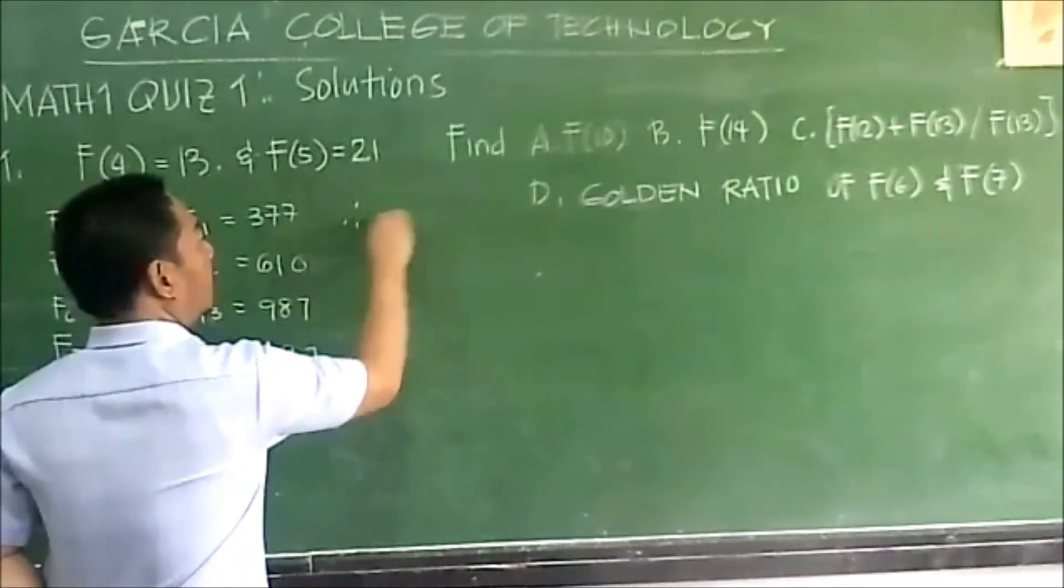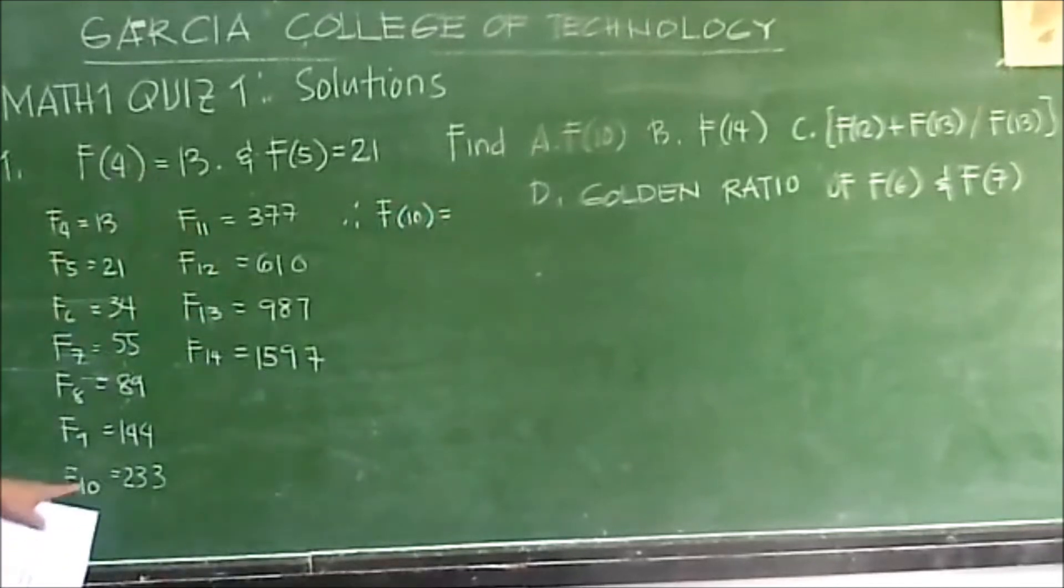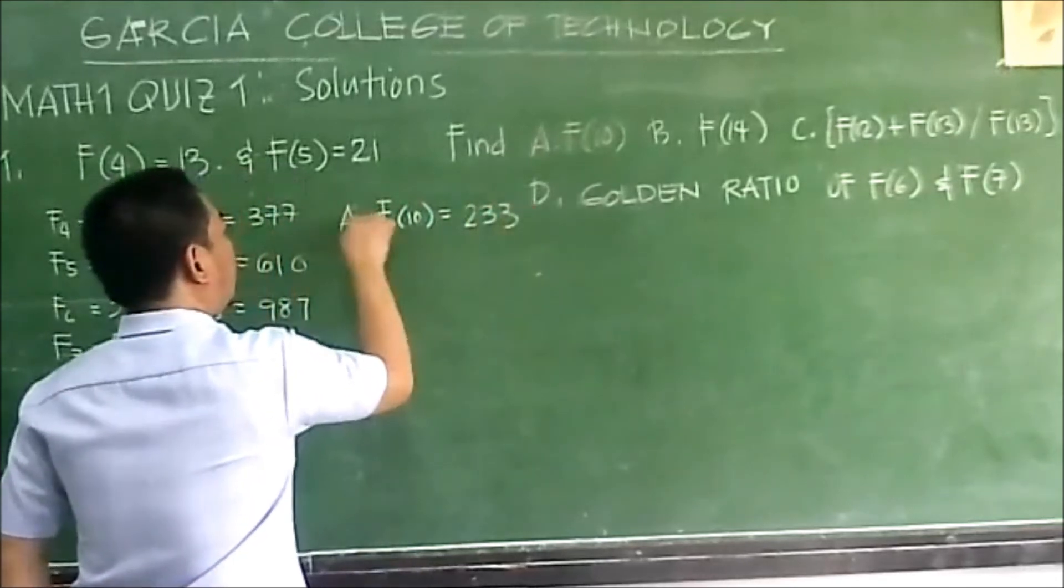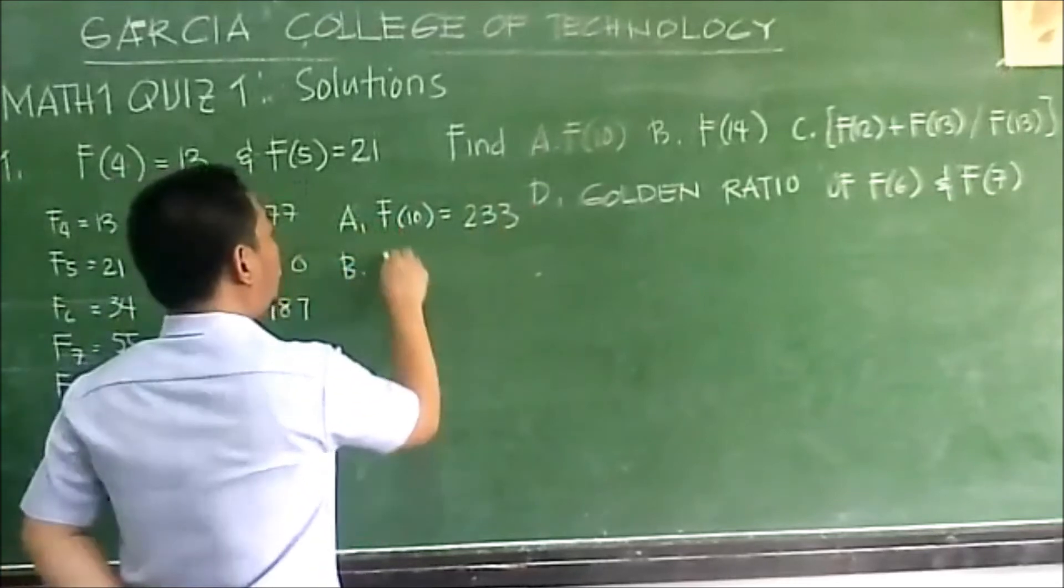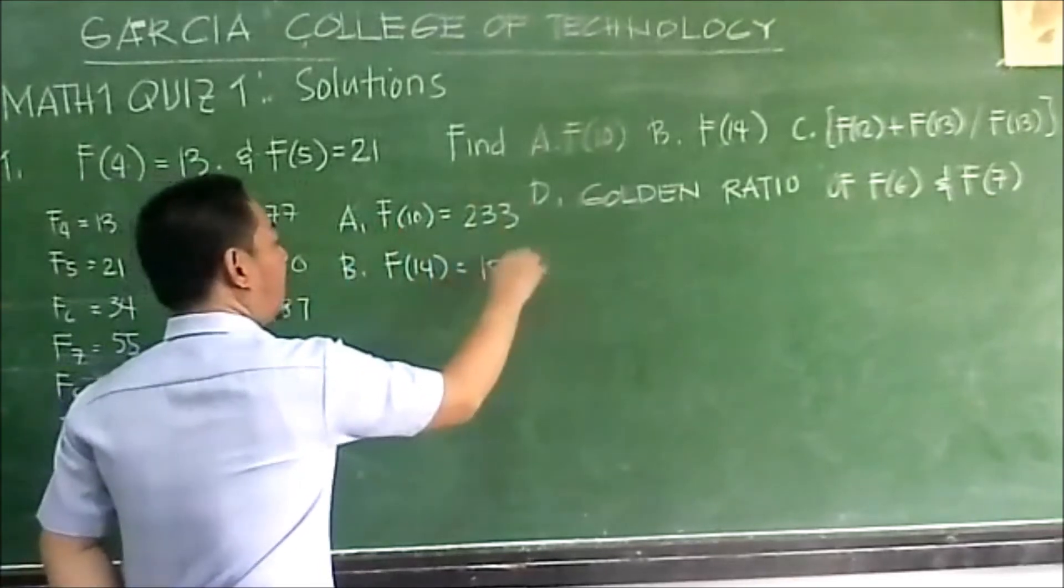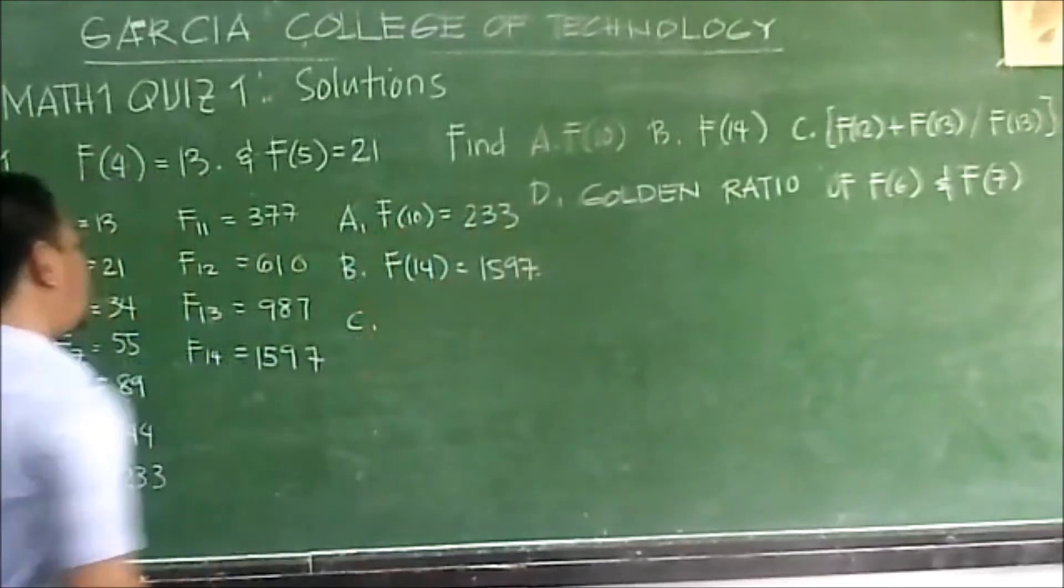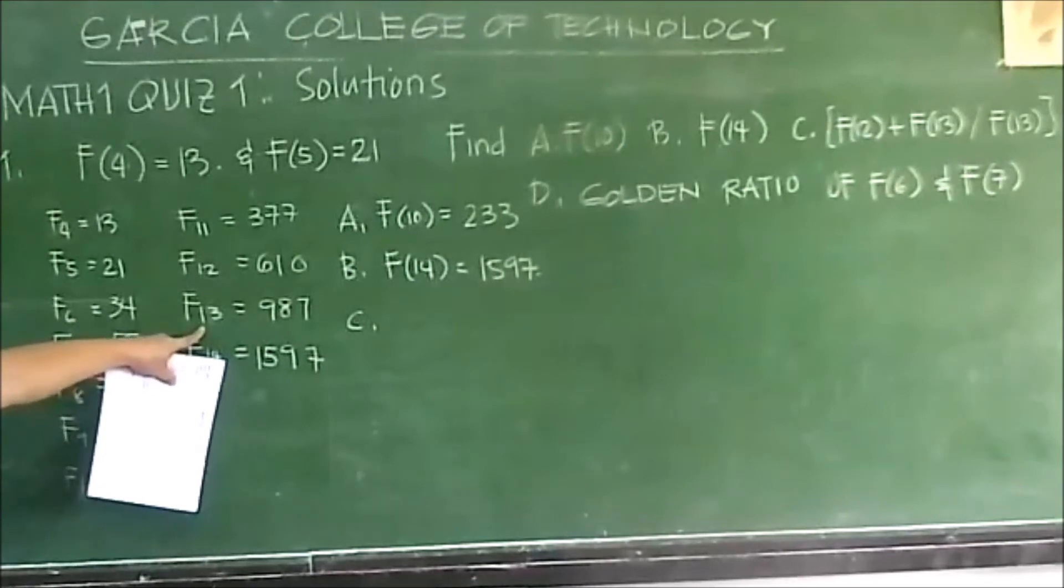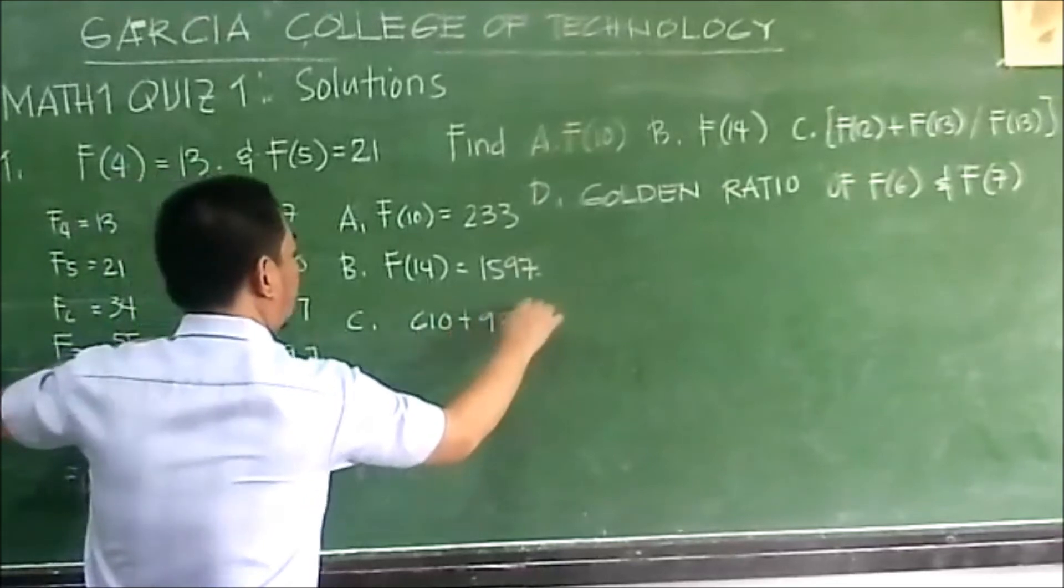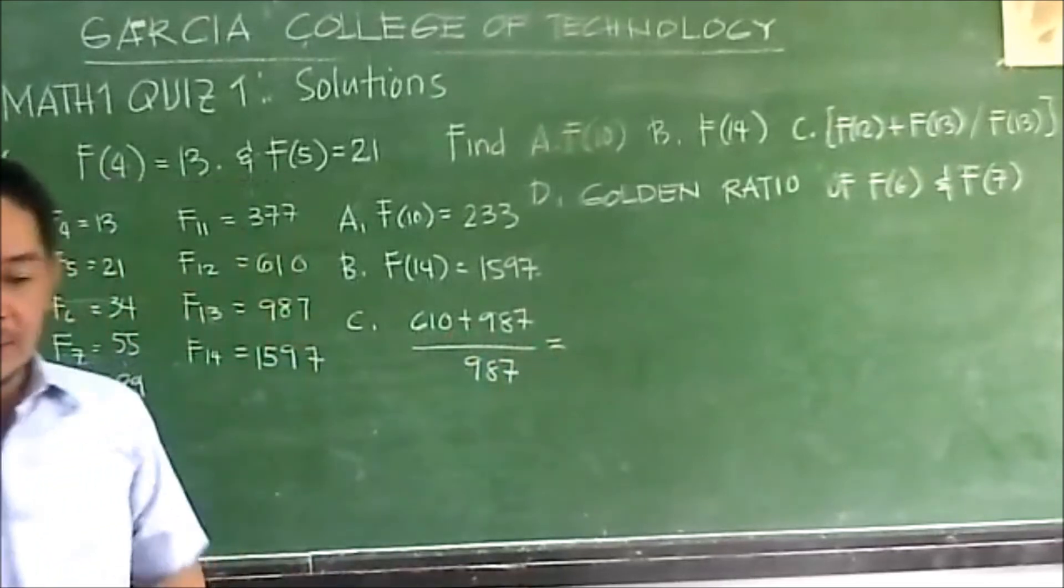Therefore, based on our Fibonacci pattern, F sub 10 is 233. That is letter A. Letter B is F sub 14 which is 1597. Then letter C is 610 plus 987 over 987.